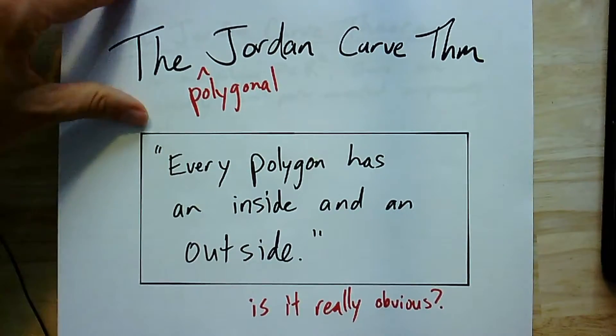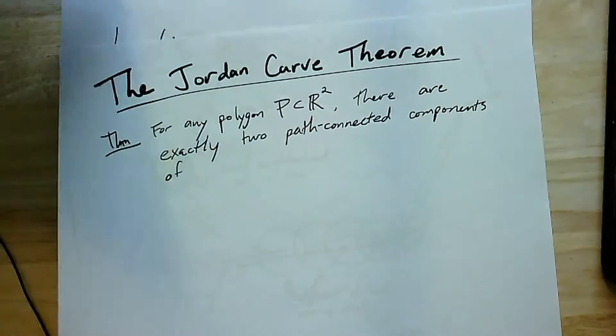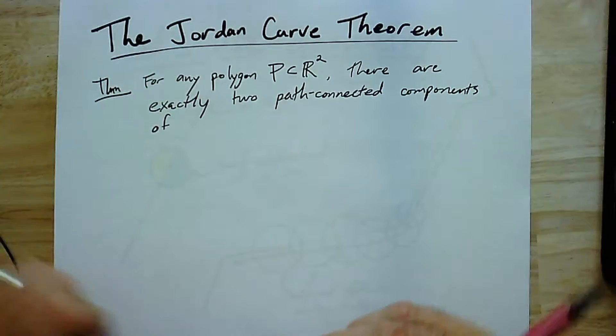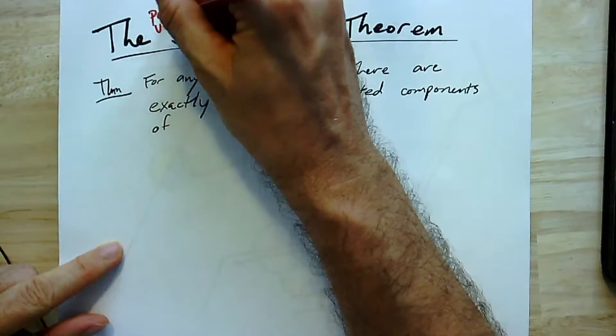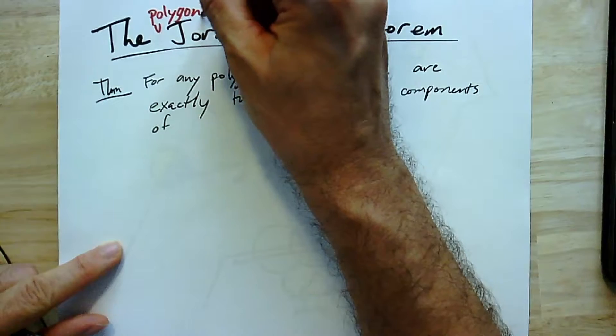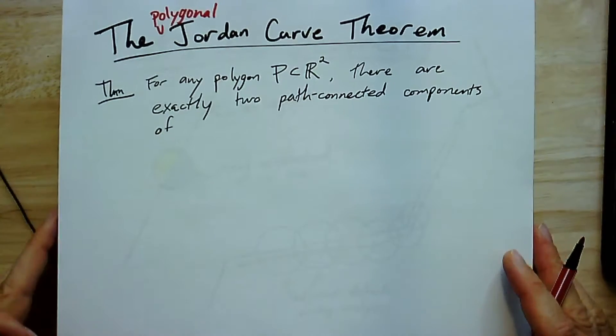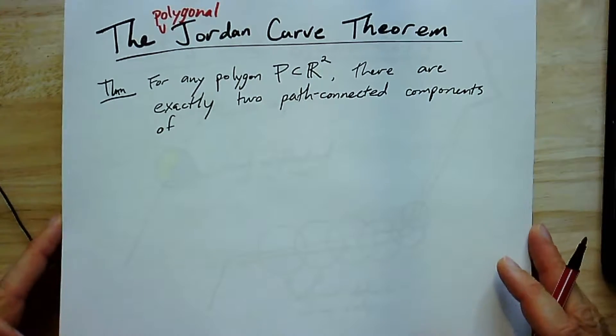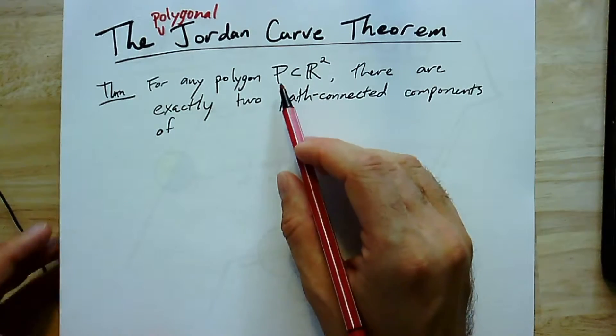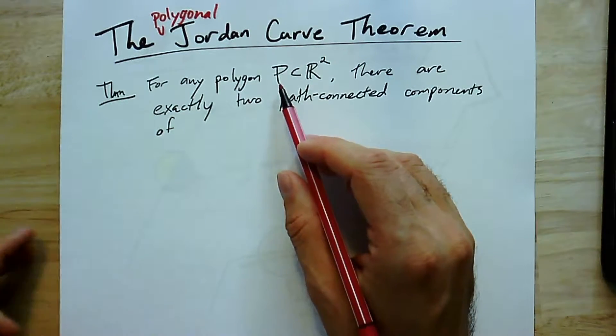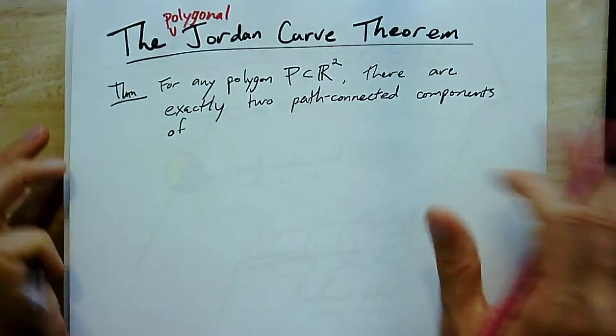So let's give the real statement here. The polygonal Jordan Curve Theorem: For any polygon P in R², remember, the polygon here is going to be the embedding of a cycle, a piecewise linear embedding of a cycle, or really just a linear embedding of a cycle graph.